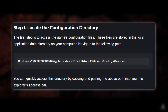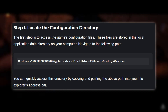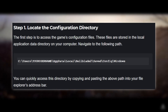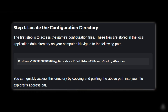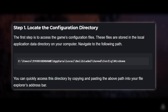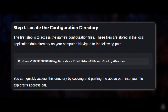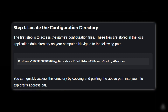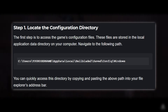Step 1: Locate the configuration directory. First, we need to access the game's configuration files. These files are stored in the local application data directory on your computer. To do this, navigate to the following path: C:\Users\[your username]\AppData\Local\Hellblade 2.